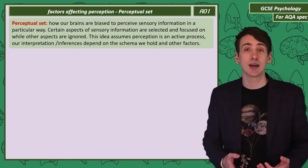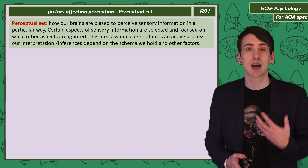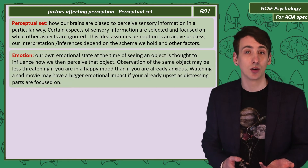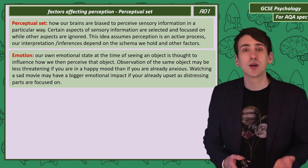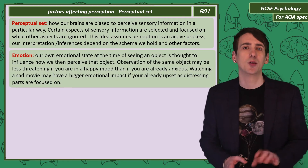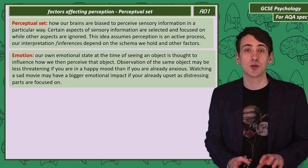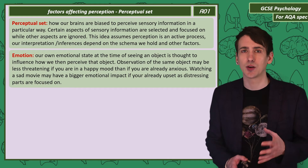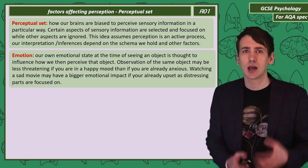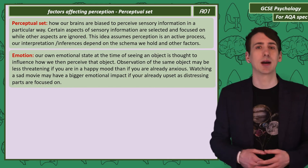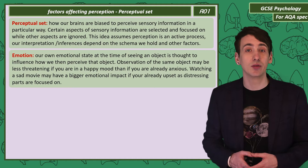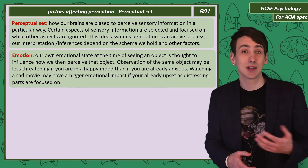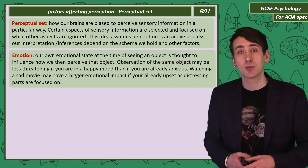Our emotional state is thought to influence how we perceive the world and objects in it. For example, you might perceive someone else's body language as aggressive if you're already in a bad mood, or a movie as particularly sad if you're depressed.